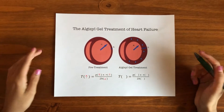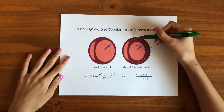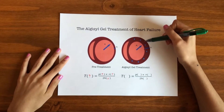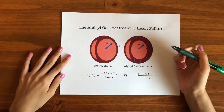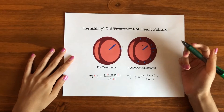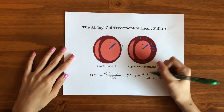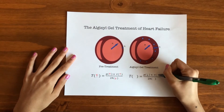Treatment for heart failure includes the injection of algaesil gel — seen here as these blue beads — into the ventricular wall. This gel serves to thicken the wall and restore function to the heart.